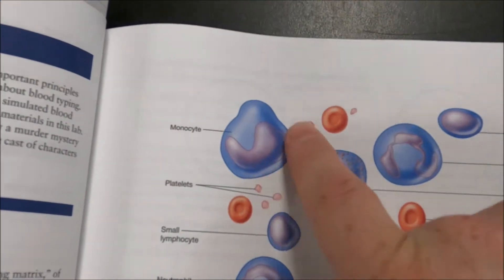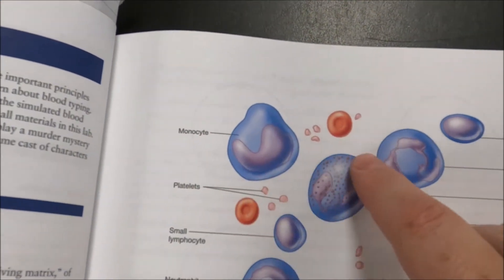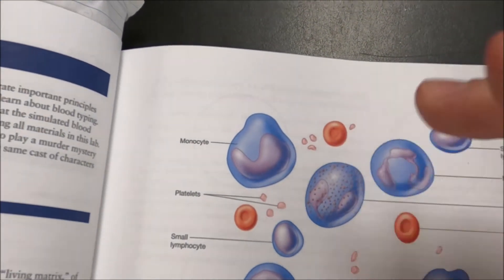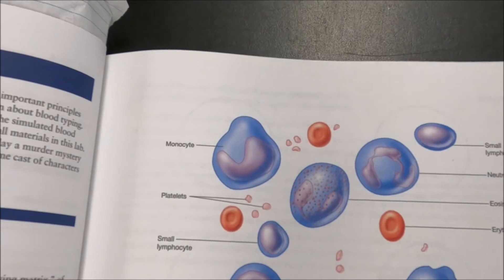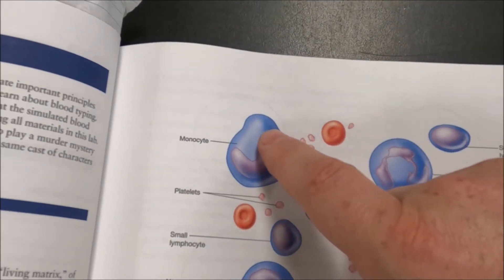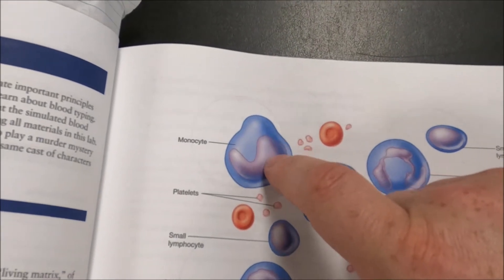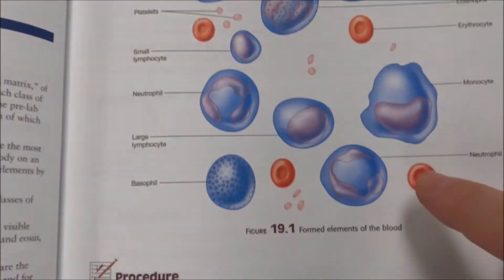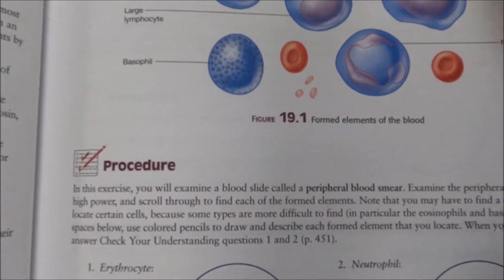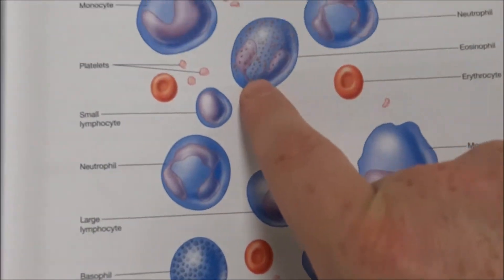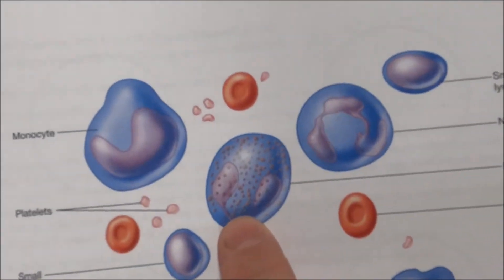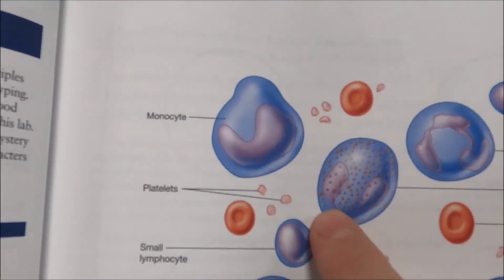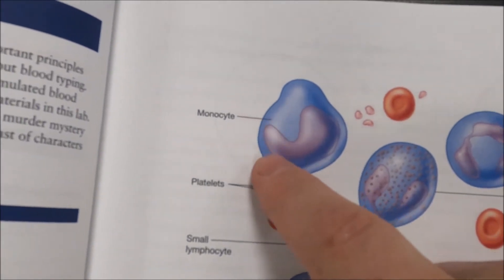A big old cell, much larger than red blood cells and typically larger than all the rest as well. We like to see a nice U-shape to the nucleus — not like an eosinophil, which will be thin by comparison. A monocyte has a big, fluffy U-shaped nucleus.